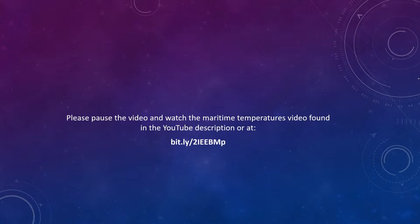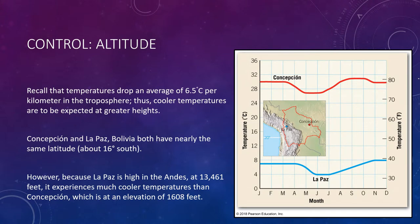Continuing down our list of temperature controls, we come to altitude. Concepción and La Paz, Bolivia both have nearly the same latitude — about 16 degrees south of the equator. However, because La Paz is high in the Andes Mountains at about 13,461 feet, it experiences much cooler temperatures than Concepción, which is at an elevation of only 1,608 feet. Temperatures drop at an average of 6.5 degrees Celsius per kilometer in the troposphere — about 3.5 degrees Fahrenheit per 1,000 feet — so cooler temperatures are expected at higher altitudes.